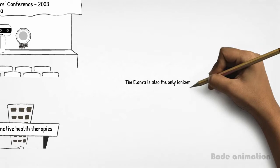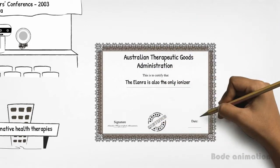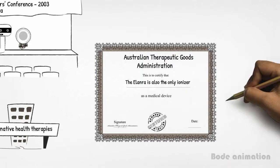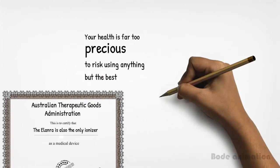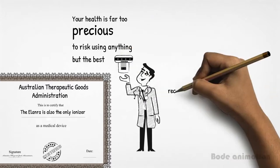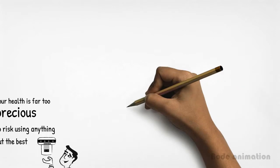The Elanra is also the only ionizer certified by the Australian Therapeutic Goods Administration as a medical device. Your health is far too precious to risk using anything but the best. That's why medical practitioners and natural health therapists recommend the Elanra Medical Ionizer.